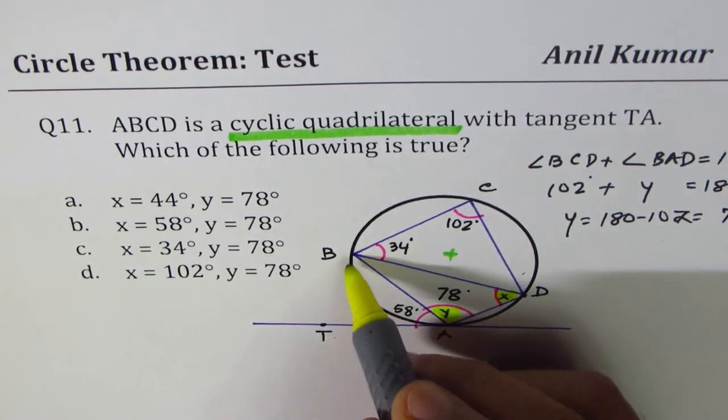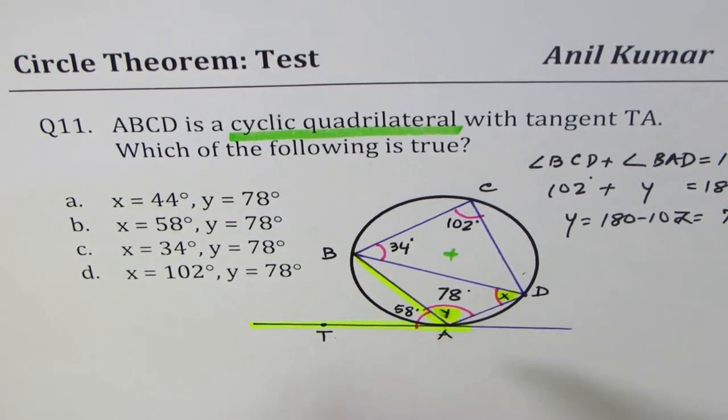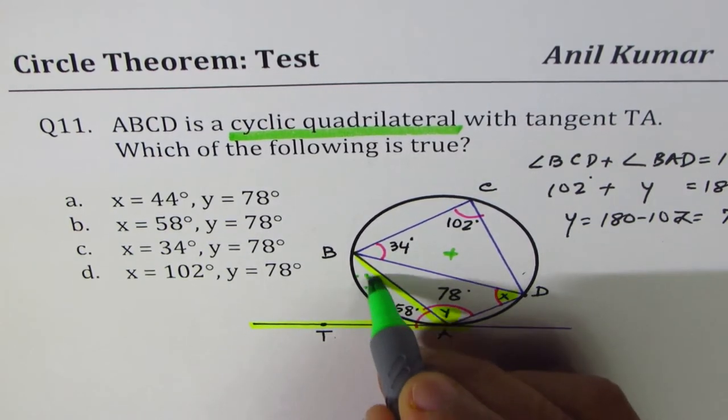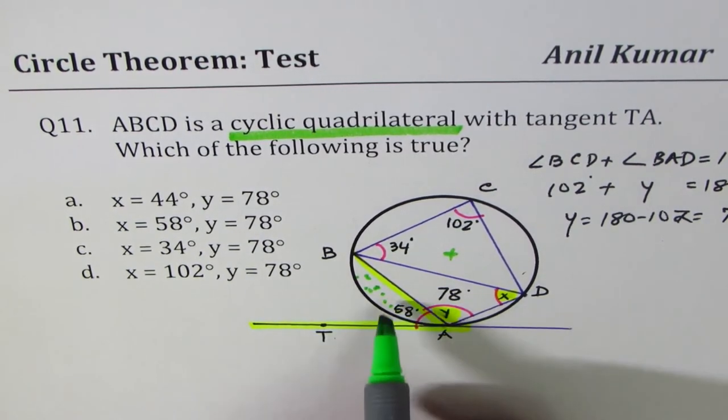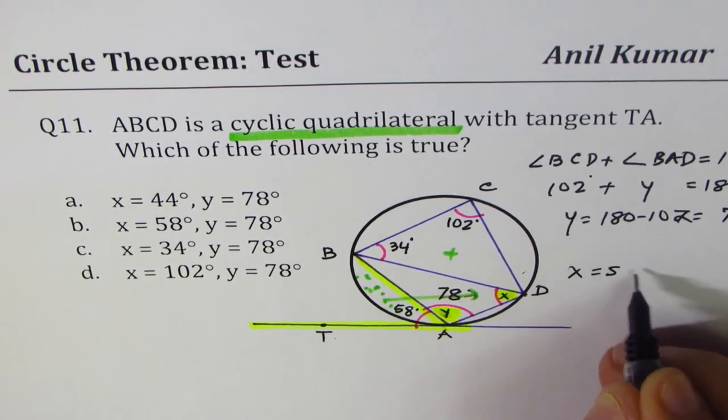We know 58 is the angle between the chord and the tangent. So there is a sector here which is enclosed. Opposite to that is the angle, which should be equal to 58. And so from here, X is equal to 58 degrees.